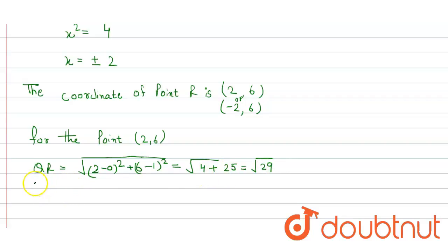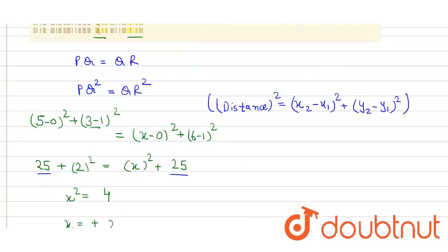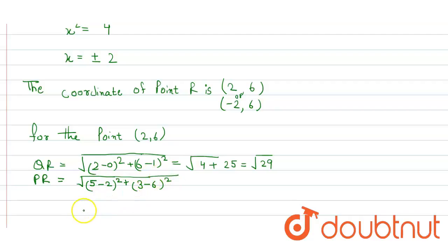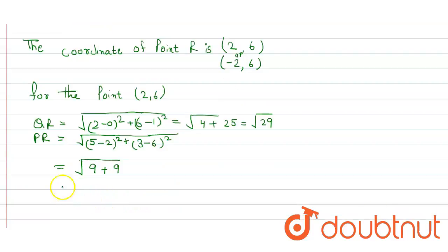Next we find PR for the point (2, 6). PR = √[(5 - 2)² + (3 - 6)²] = √[9 + 9] = √18 = 3√2.